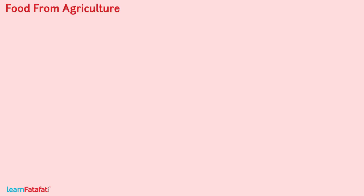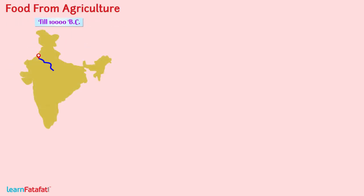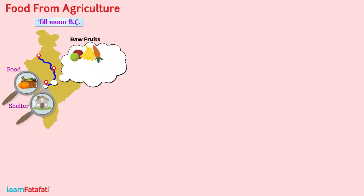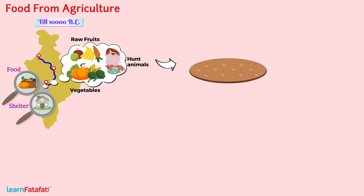Food from Agriculture: Till 10,000 BC, people were travelling in groups from place to place in search of food and shelter. They obtained raw fruits, vegetables, or hunted animals for food. It was very difficult for them to gather food. To solve this problem, they started growing the same type of plant at one place on a large scale.